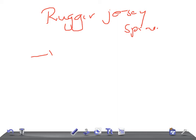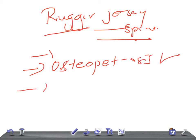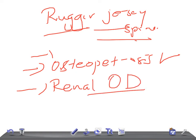So what are the causes? If you see this question in USMLE, you should think of two important causes. One is osteopetrosis — very important. And the other cause that should strike your mind is renal osteodystrophy. Rugger Jersey spine is seen in osteopetrosis and renal osteodystrophy. Thank you so much for watching, take care.